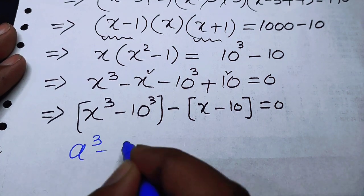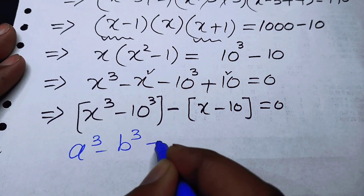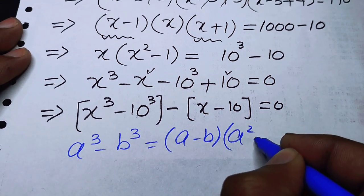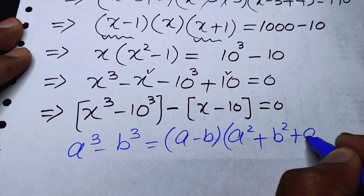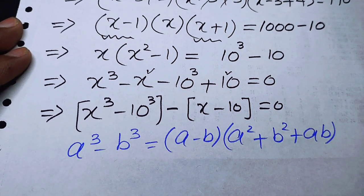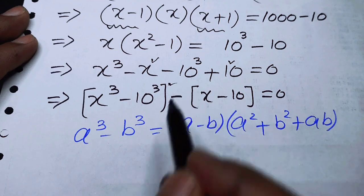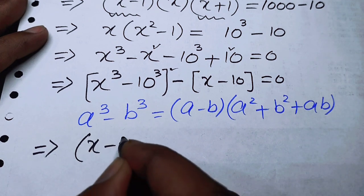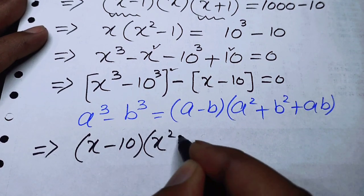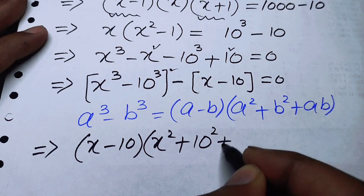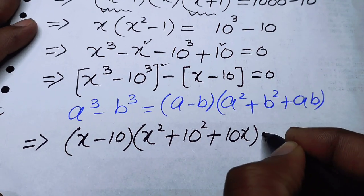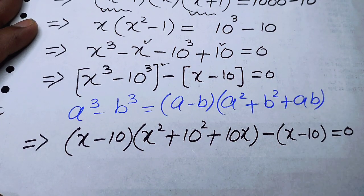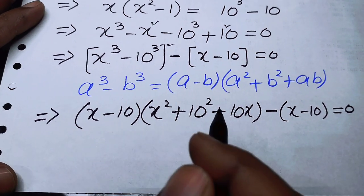The cubic formula states: a cubed minus b cubed equals (a minus b)(a squared plus b squared plus ab). Applying this to (x cubed minus 10 cubed) gives (x minus 10)(x squared plus 10 squared plus 10x), and the remaining term is minus(x minus 10) equals 0.